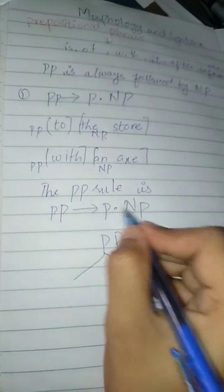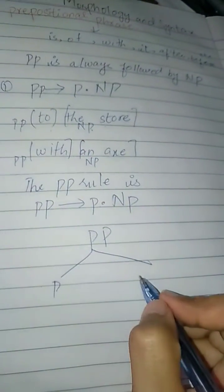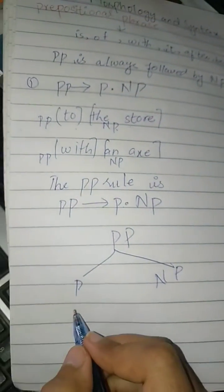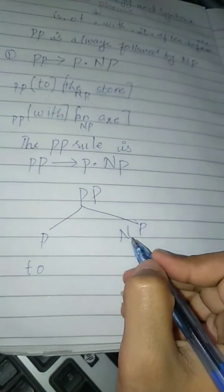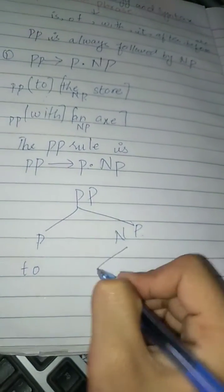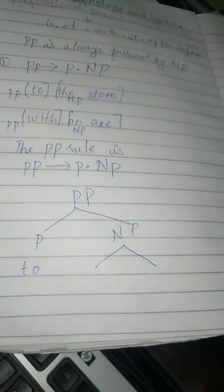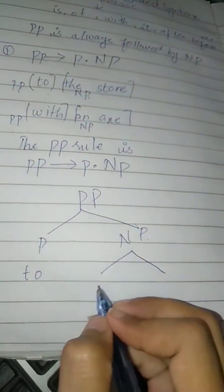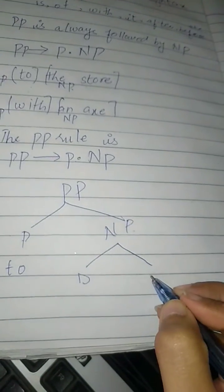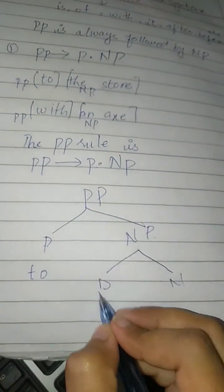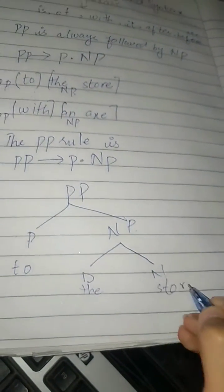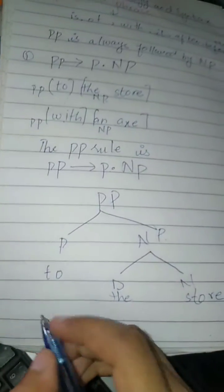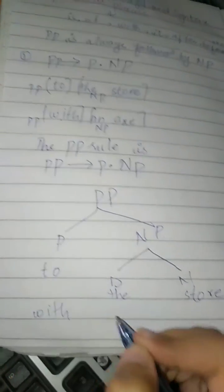In the tree diagram, the prepositional phrase is divided into P (preposition) and NP (noun phrase). Taking the example 'to the store': 'to' is the preposition, and the noun phrase is further divided into a determiner and a noun. As covered in the previous lecture, the determiner is 'the' and the noun is 'store.' Similarly, in 'with nx,' 'with' is the preposition, and the determiner is followed by the noun.